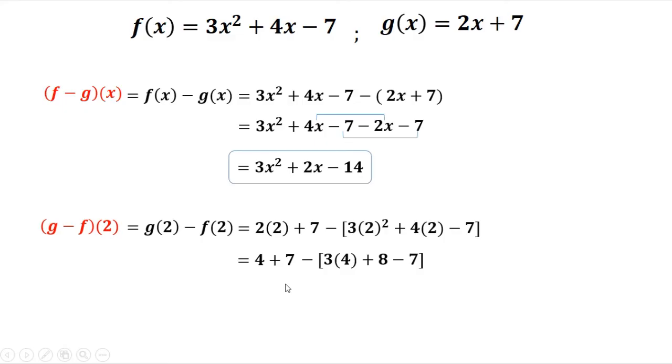So 4 plus 7 is 11, then minus, 3 times 4 is 12, plus 8 is 20, minus 7 that's 13. So the answer is negative 2.